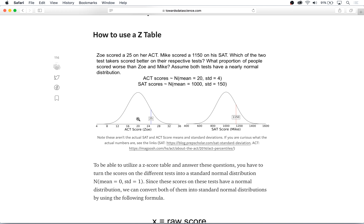The first thing to take away from this question is that we have two nearly normal distributions. ACT scores have a mean of 20 and a standard deviation of 4. SAT scores have a mean of 1000 and a standard deviation of 150.